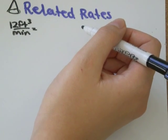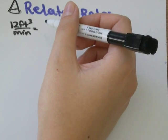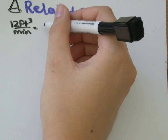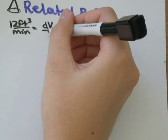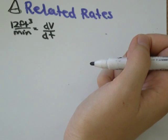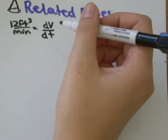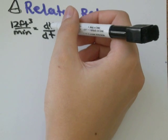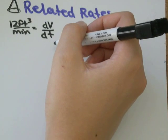Cubic feet is a unit of volume. Minute is a unit of time. So when we have the rate 12 cubic feet per minute what we have is a rate of volume over some measure of time. So that's equivalent to dv over dt, the derivative of volume with respect to time.